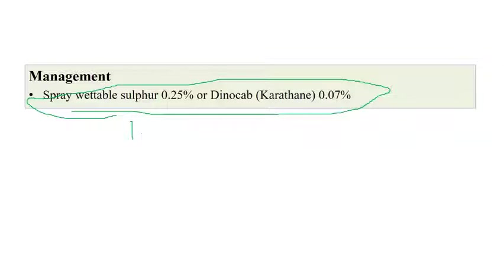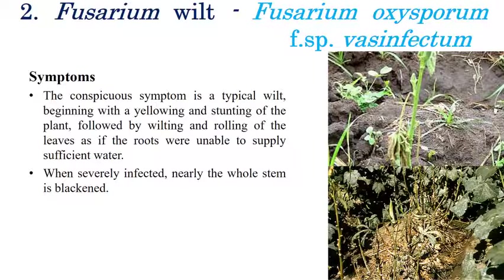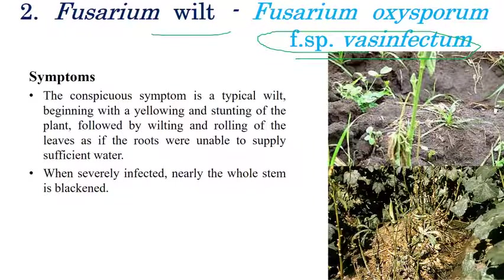The next disease is Fusarium wilt, caused by Fusarium oxysporum f.sp. vasinfectum. The name itself indicates wilting of plants. The typical symptoms are wilting of the plant, yellowing of leaves in the initial stages, and in later stages, rolling of leaves and eventually death of the plant due to insufficient water supply.